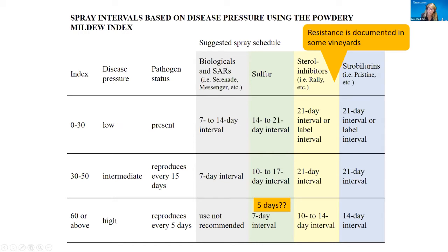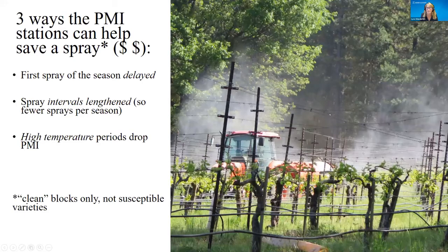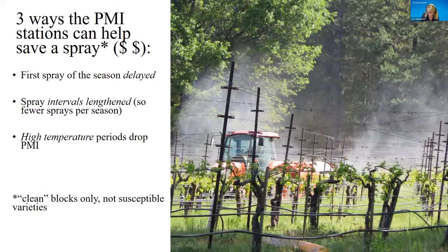From zero to 30 points, disease pressure is considered low — the powdery mildew pathogen is present but not reproducing. When there are 30 to 50 points, disease pressure is intermediate and the pathogen reproduces about every 15 days. When pressure is high — the index is 60 or higher — it reproduces every five days. We have a suggested spray schedule based on the material category and the index. Generally, there are three ways the powdery mildew risk index can help save a spray in clean blocks only: the first spray of the season delayed, spray intervals lengthened, and high temperatures drop the PMI.